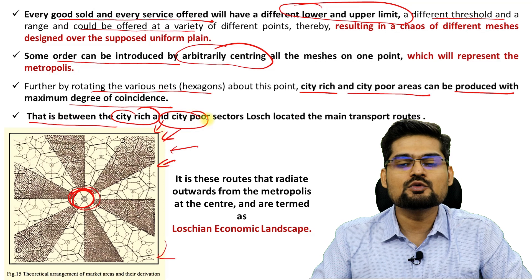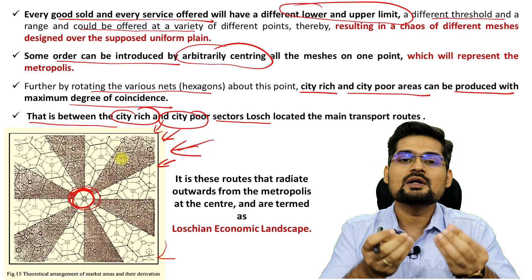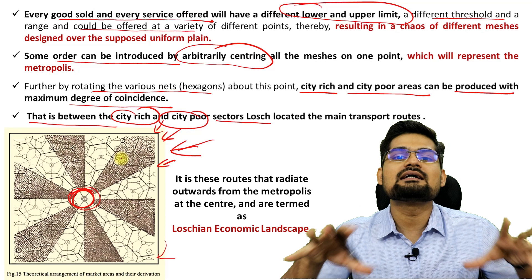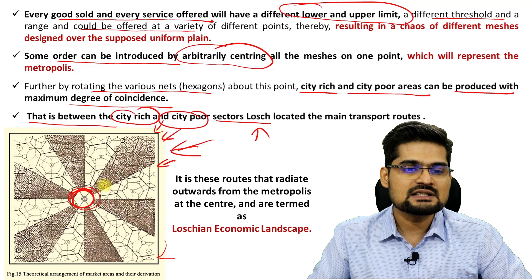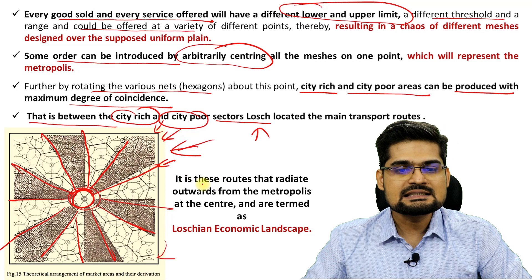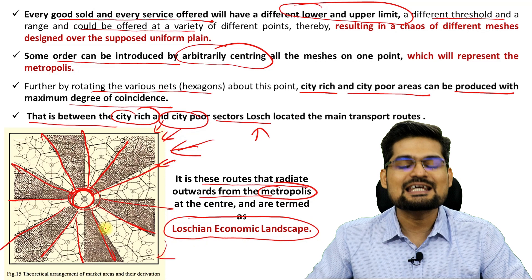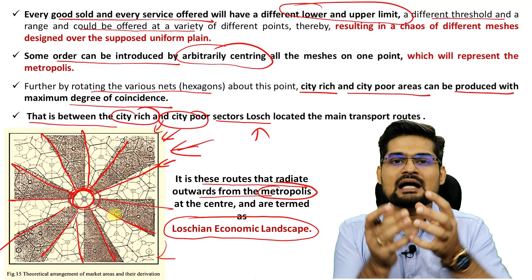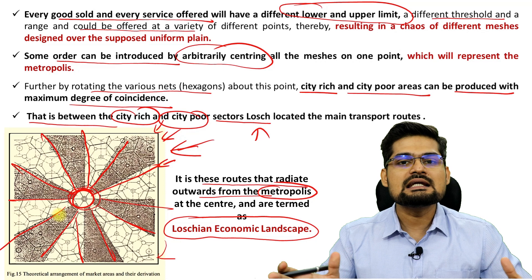This Löschian model is located in a context where you have industrial sectors alongside agricultural sectors, with a clear divide between rich and poor — reflecting a capitalistic society. Along transport corridors radiating outwards from the central metropolis, this becomes the Löschian economic landscape: a city center with maximum demand, where transport routes radiating out create an economic landscape that brings order to the disordered system.